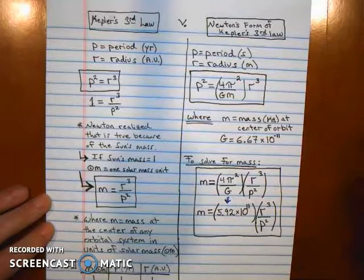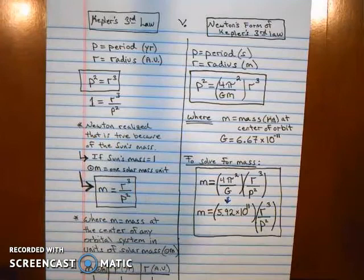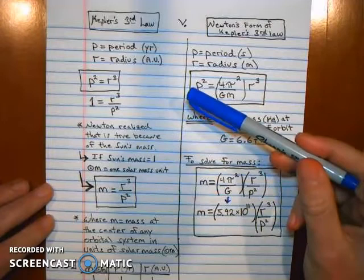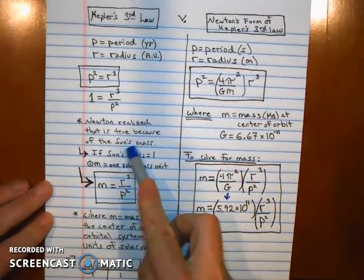But Kepler didn't propose a reason. Remember, this is all an empirical law. And so when Newton followed, Newton realized that the only reason why this is true is because it has something to do with the gravitational force from the sun.